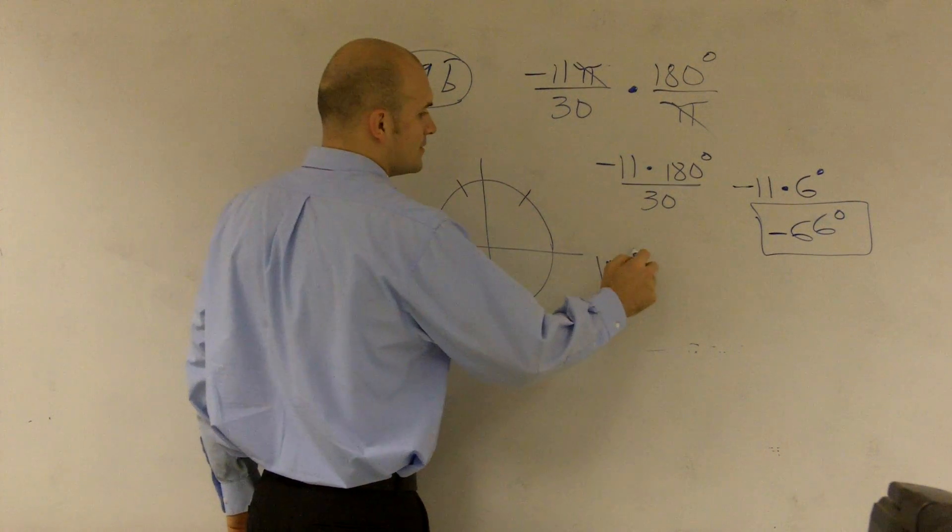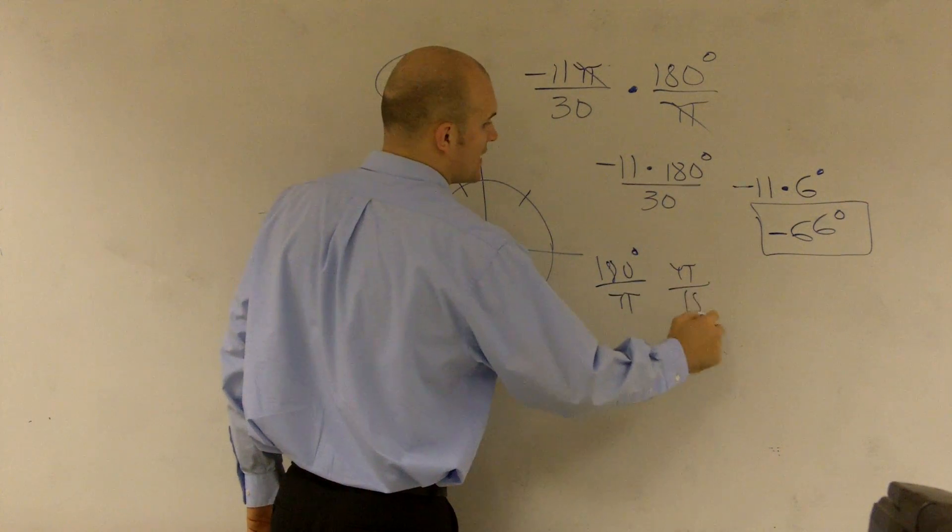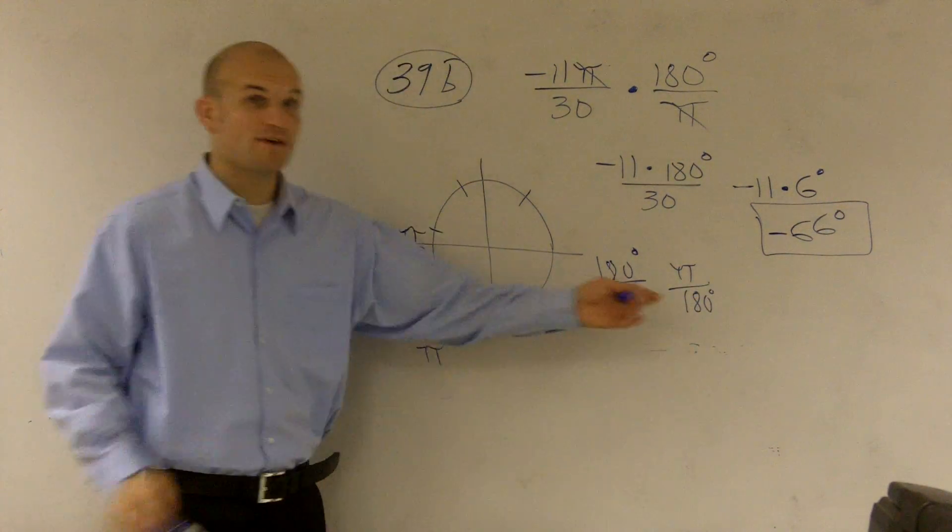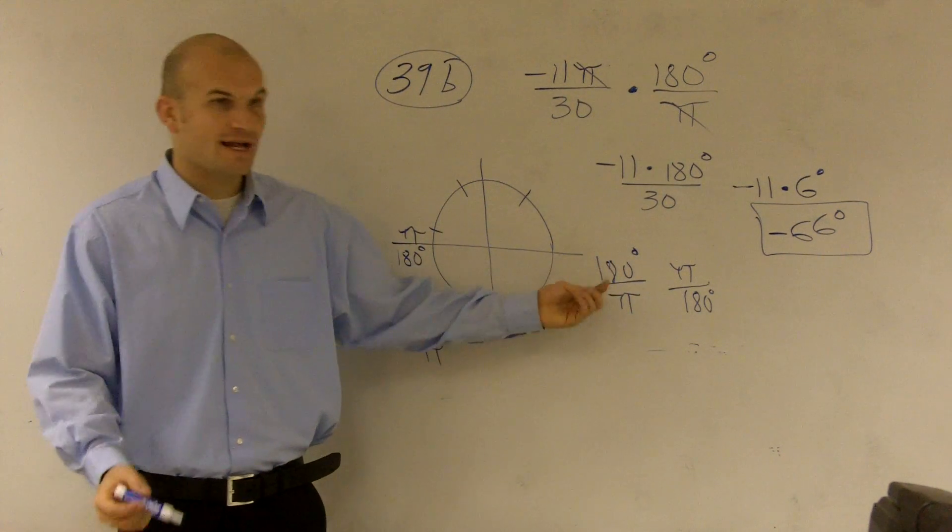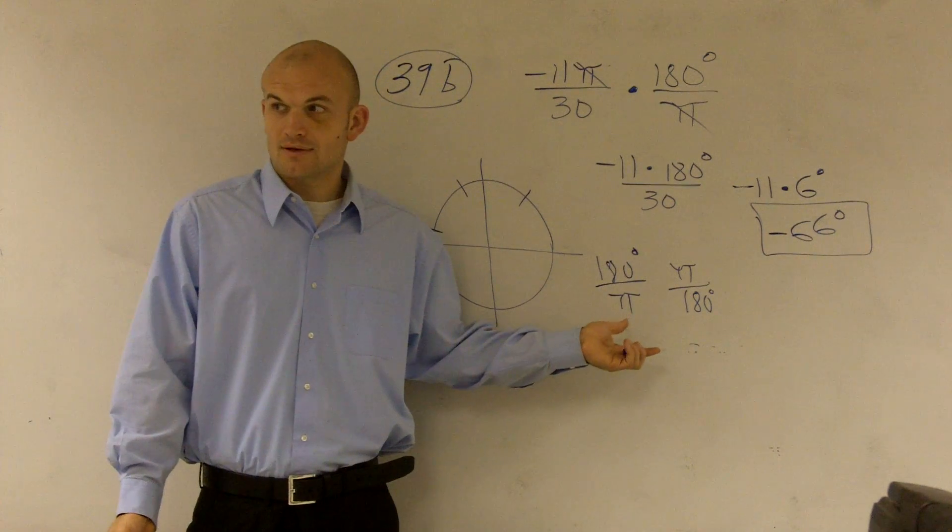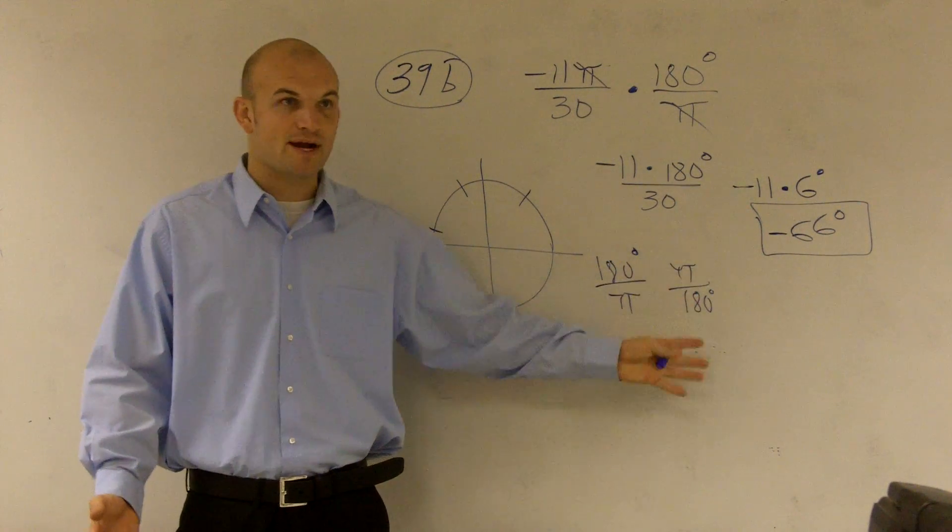There's either 180 degrees over pi, and there's pi over 180 degrees. These are equivalent ratios. They're just comparing. They're not equivalent fractions, but they're equivalent ratios. This is to this, and this is to that. They're comparing each other.